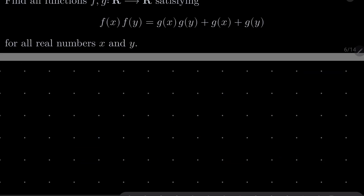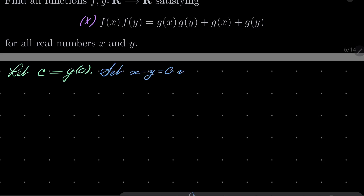Let's call our equation asterisk. For the sake of brevity, let c = g(0). Now let's set x and y to be 0 in condition asterisk. Then on the left hand side we have f(0)², and on the right hand side we have c·c + c + c, so it's c² + 2c.